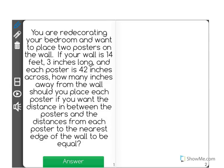You are redecorating your bedroom and want to place two posters on the walls. If your wall is 14 feet 3 inches long and each poster is 42 inches across, how many inches away from the wall should you place each poster if you want the distance in between the posters and the distances from each poster to the nearest edge of the wall to be equal?